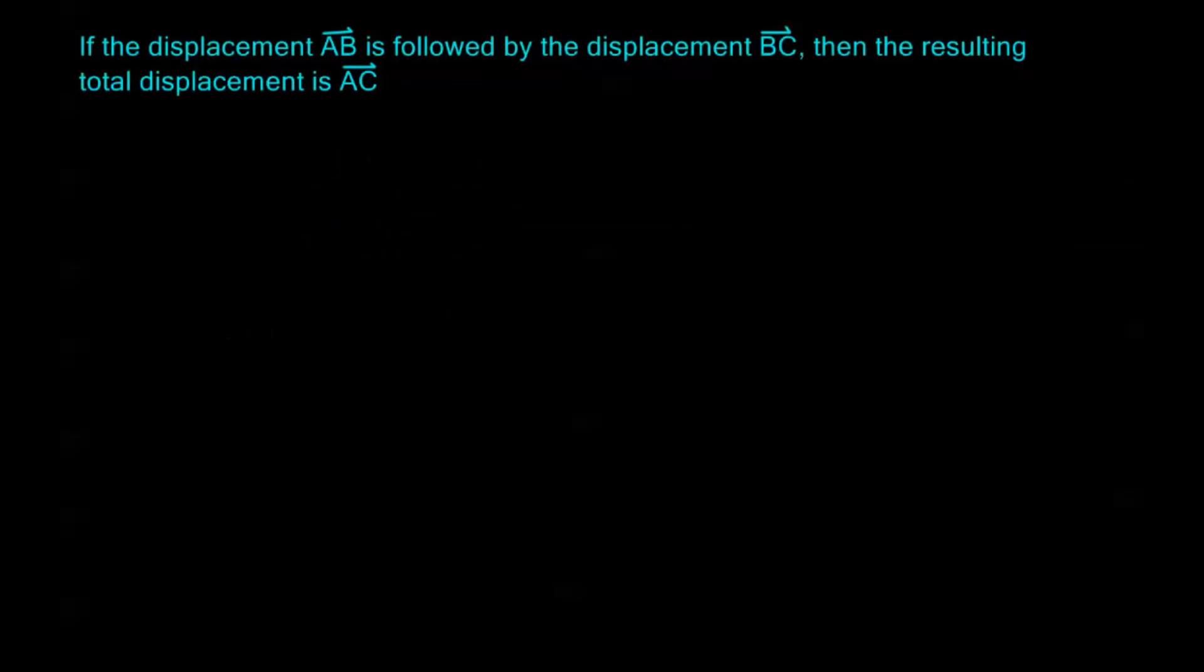Now, if we have two vectors, let's say I have this displacement AB. So, let's say I have this displacement AB. And I follow that with the displacement AC, or sorry, BC.